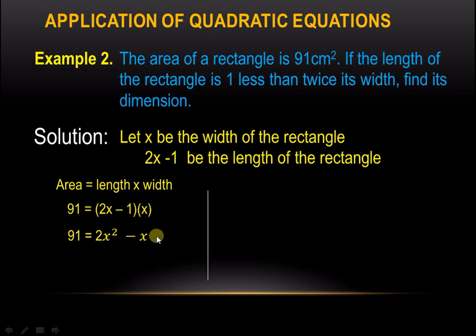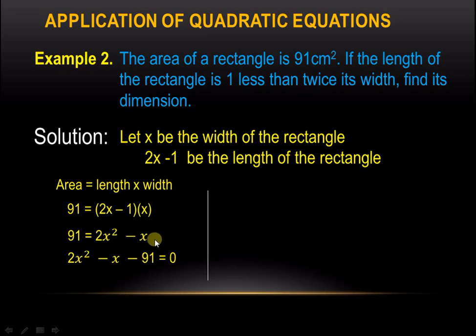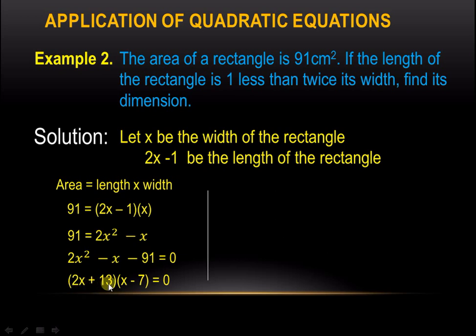We transfer 91 to the other side, so the equation becomes 2x squared minus x minus 91 equals 0 — we transferred, so we changed the sign. Factoring this out, the factors are (2x plus 13)(x minus 7) equals 0.